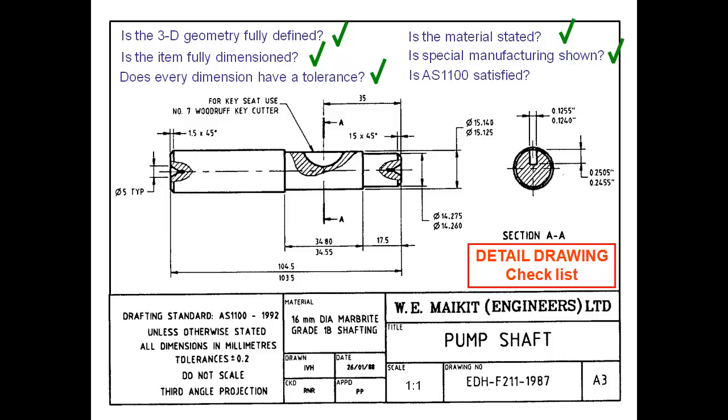And lastly is our drawing standard satisfied. And that apart from all the things we've done comes down to the fact that we've given the projection system. So we've said third angle projection. We could have also drawn the little picture of the cone in the two views. To show that we've also given a scale and a drawing number.